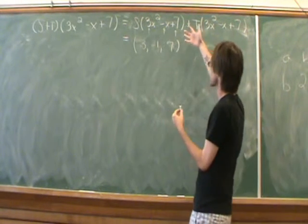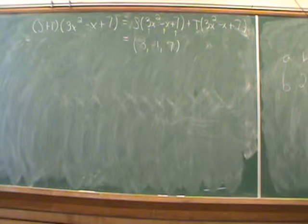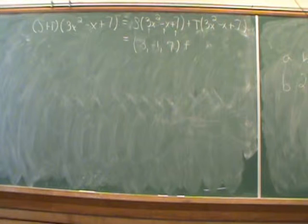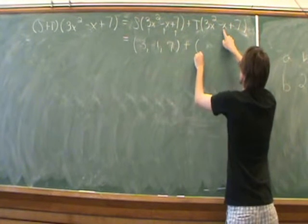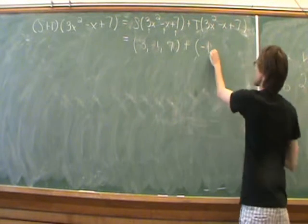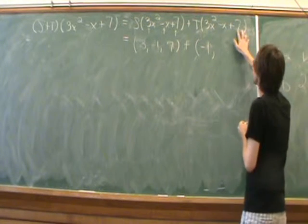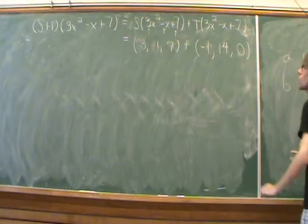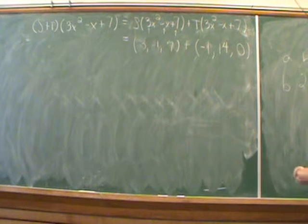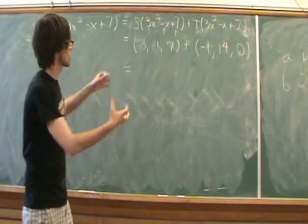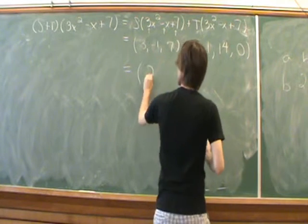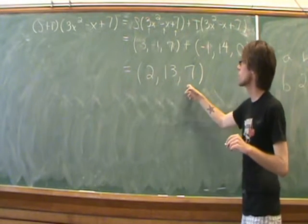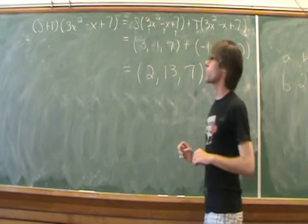The coefficients in front of x squared, x, and the constant term get mapped into a vector in 3-space. Next we evaluate T at this given polynomial. T sends the B coefficient to the front, takes the constant term C and multiplies it by 2 for the middle component, and the third component is always 0. To finish the question we do regular vector addition: (3 + (-1), -1 + 14, 7 + 0). So this vector in R3 is S plus T evaluated at this particular polynomial.